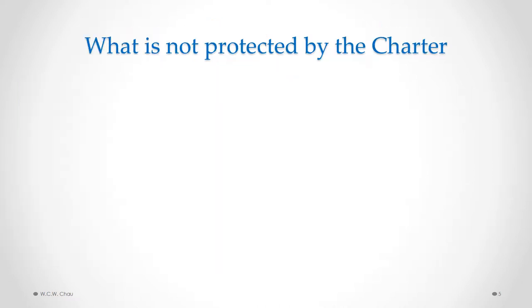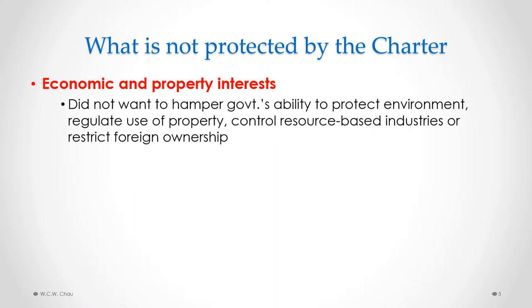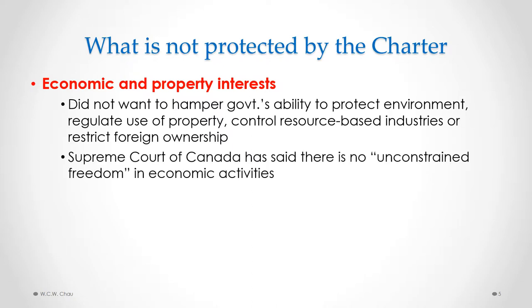The Charter protects many different rights and freedoms, but there are some specific interests not protected by the Charter. The key omission is any kind of protection for economic and property interests. There was a conscious decision made by the governments that negotiated the Charter that economic and property interests should not be protected. The official explanation was that they did not want to hamper any government's ability to protect the environment, regulate the use of property, control resource-based industries, or restrict foreign ownership. The Supreme Court of Canada has confirmed that there is no unconstrained freedom in economic activities.